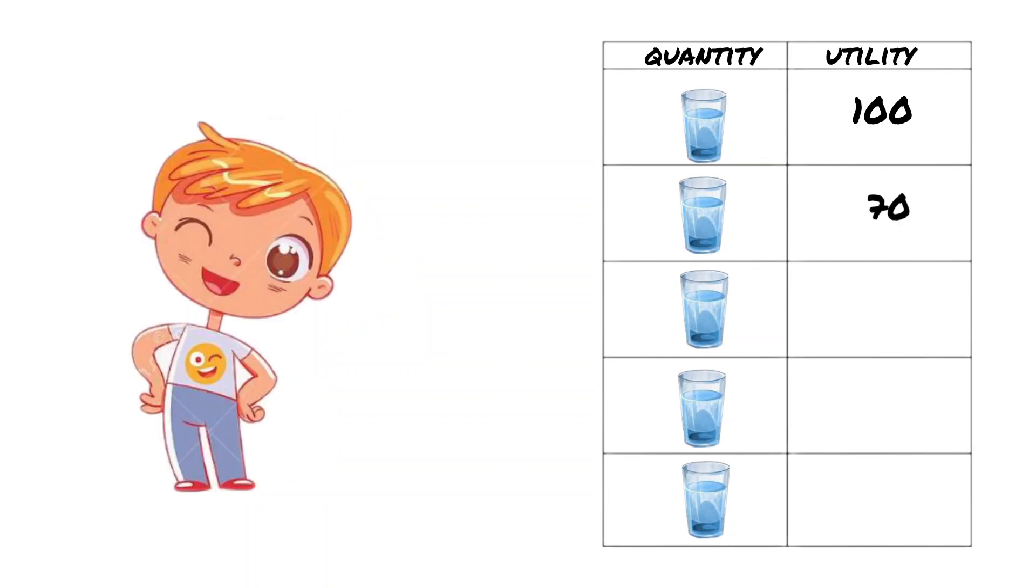Once we have enjoyed the first glass of water, then the marginal usefulness of the second glass will be 70. We are already less happy with it than the first one, but we still experience a small amount of thirst, and we drink this glass with pleasure.